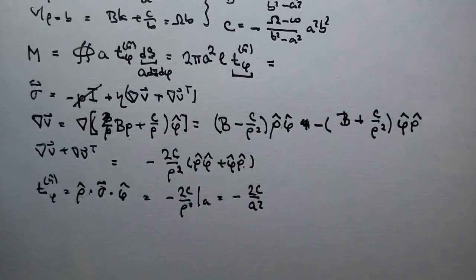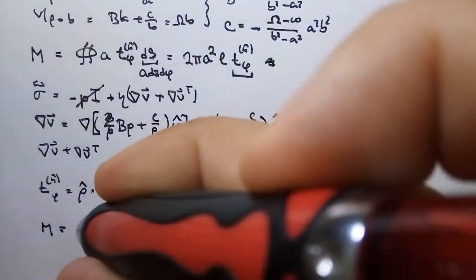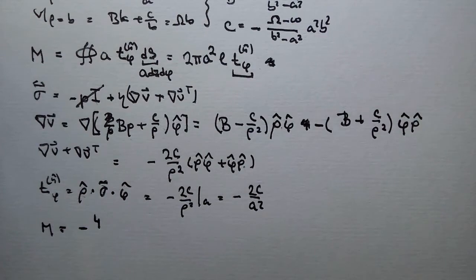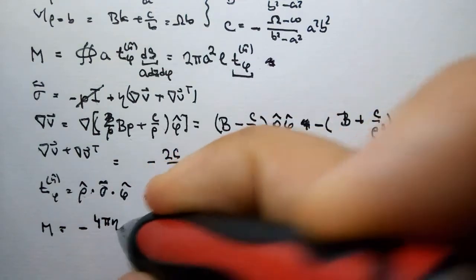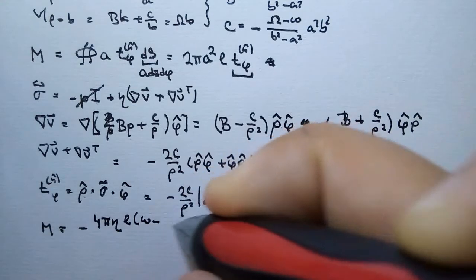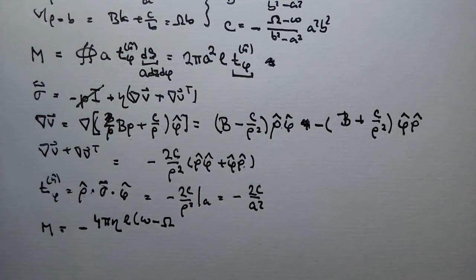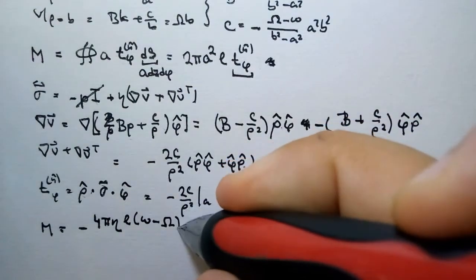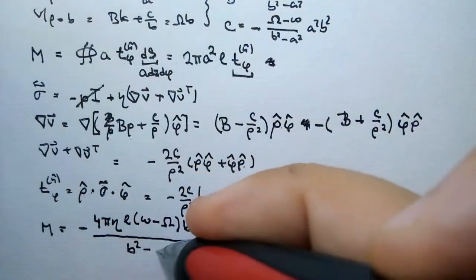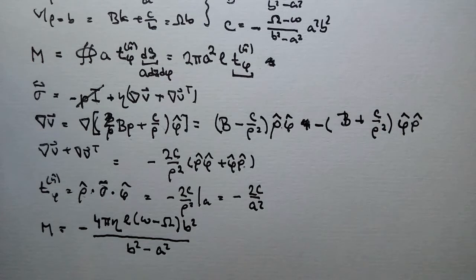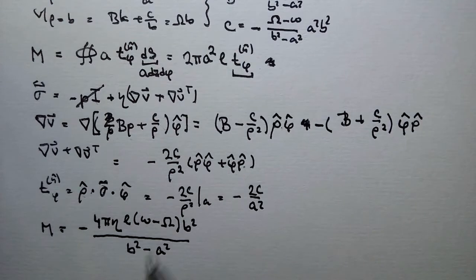Putting it together, the total torque is 2πaL · a · η · (−2C/a²), and substituting in the expression for C, the final result is: M = −4πηL(Ω − ω)a²b²/(b² − a²). This is the torque exerted on the inner cylinder.